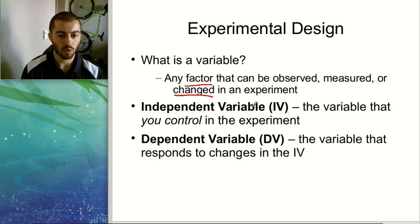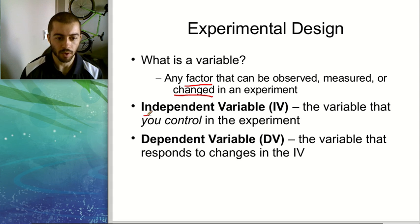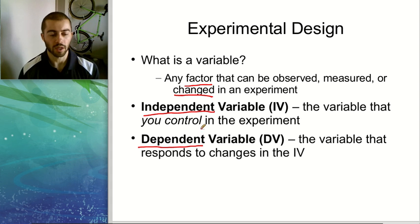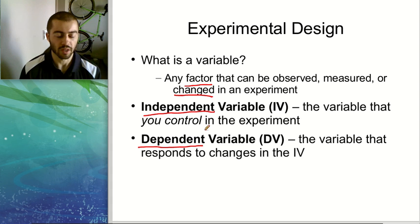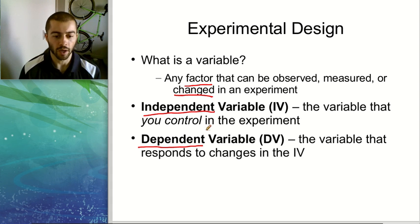The two most important types of variables that we need to know are the independent variable and the dependent variable. In an experiment, the independent variable is the variable that you're controlling — that you're manipulating or changing in the experiment.